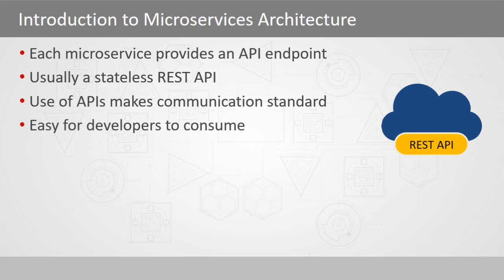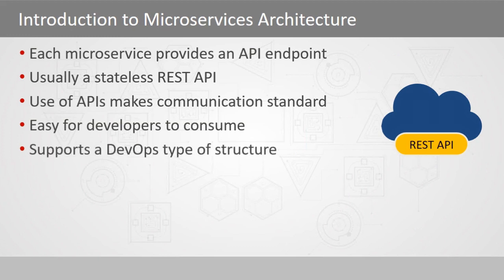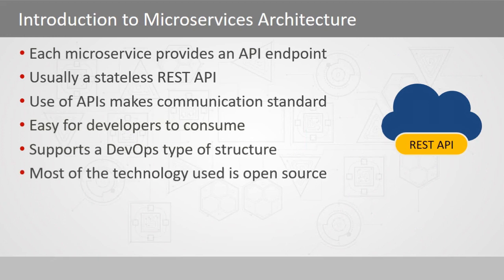It's easier for the developers to consume because once they know the standard and the pattern that is required, it's very easy for them to write their code to apply to any individual service situation. All of this leads to better DevOps type of a structure, because these various teams — the operations people as well as the developers — now have to talk to each other to sort out the communication standard and develop structure for how these different services are going to communicate. Most of the technology used is open source, and most developers will tend to use open source.